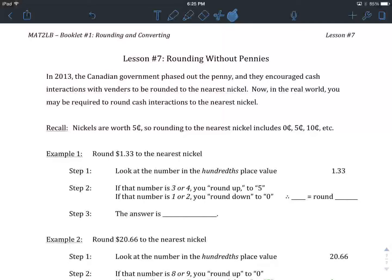Now in the real world you may be required to round cash interactions to the nearest nickel. So if you go buy a coffee at Tim Hortons, they're going to round your bill, assuming you're paying with cash, to the nearest nickel.